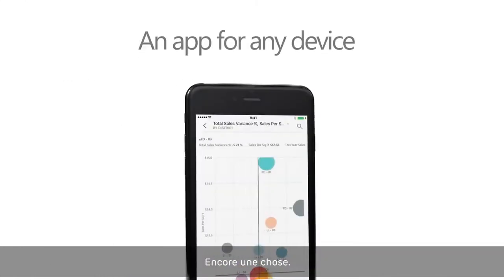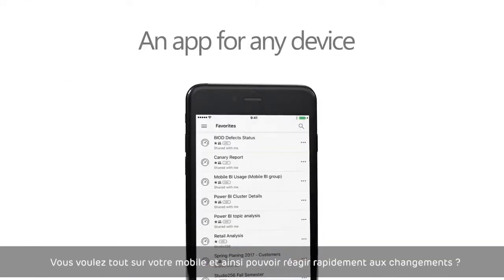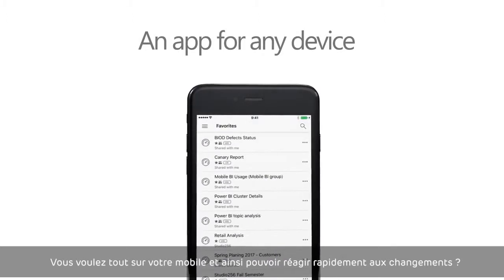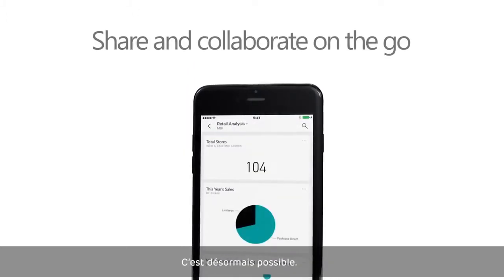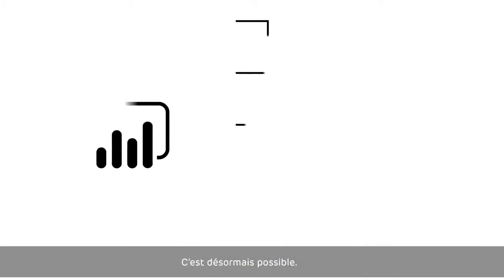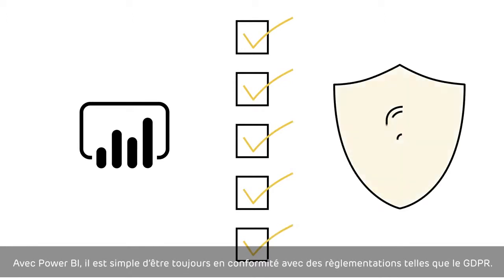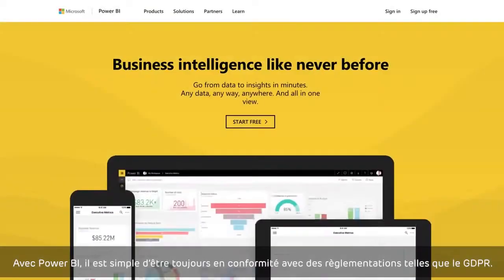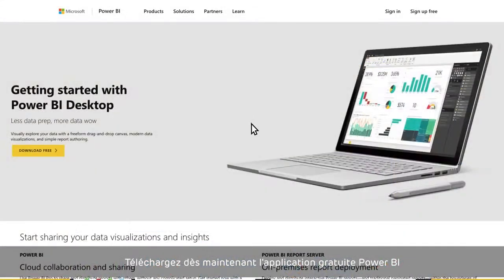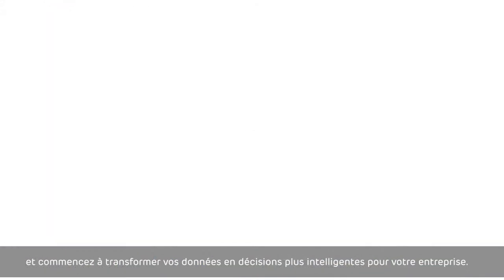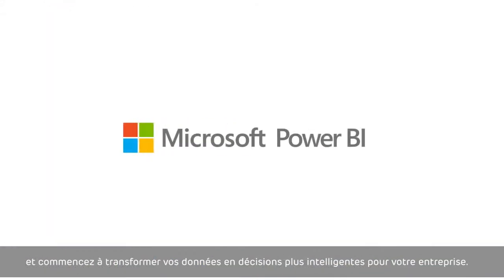And one more thing — want it all on mobile so you can react to changes on the fly? Here you go! With Power BI, we make it easy to always be in compliance, too, for things like GDPR. Download the free Power BI application today and start turning your data into smarter decisions for your business.